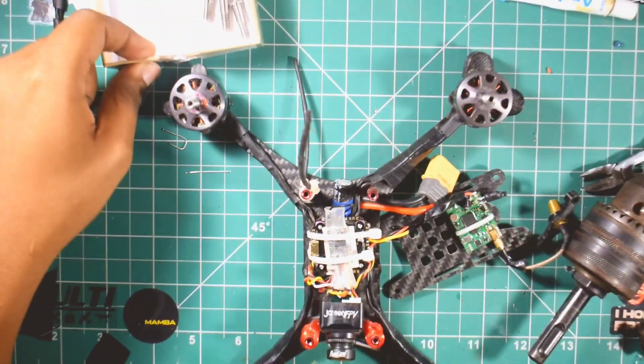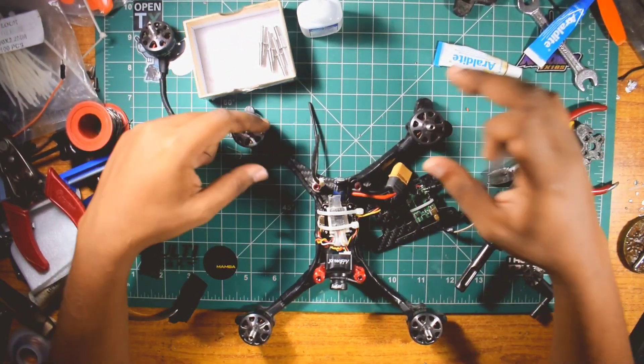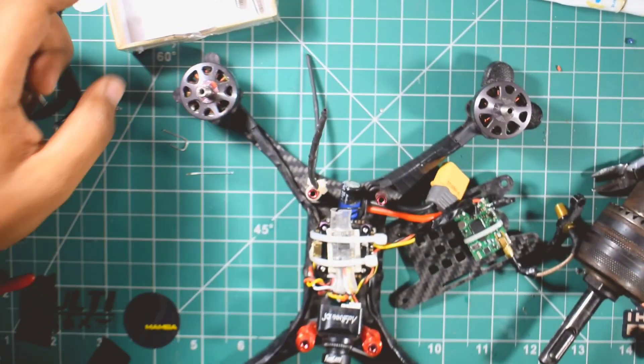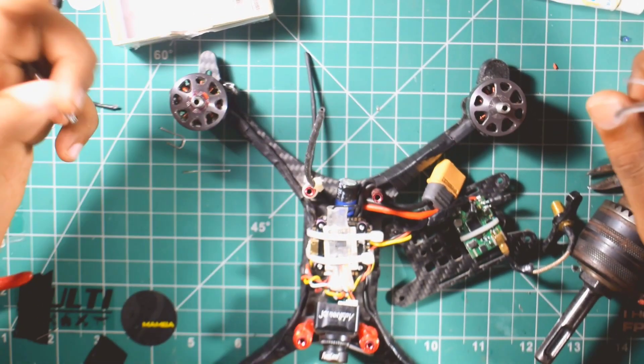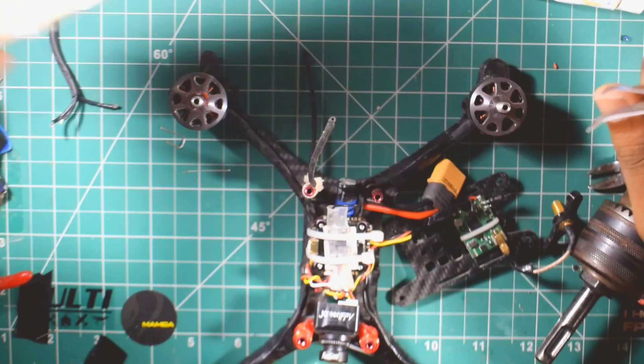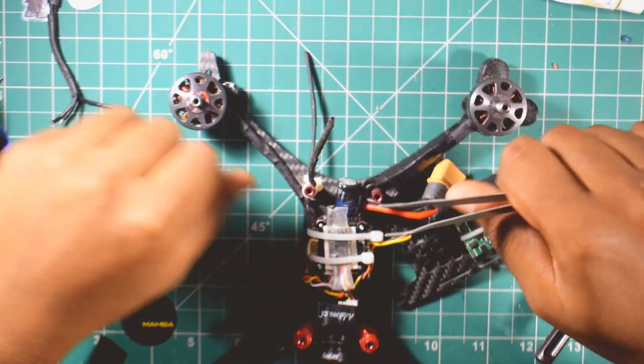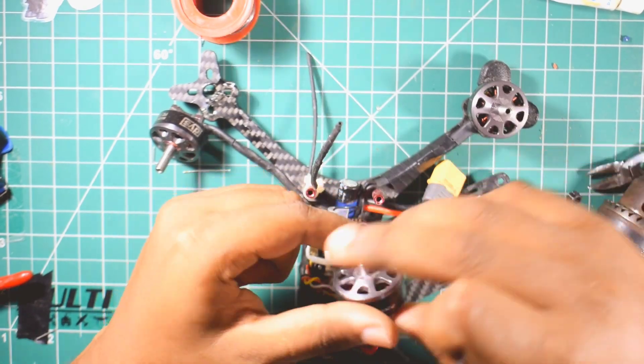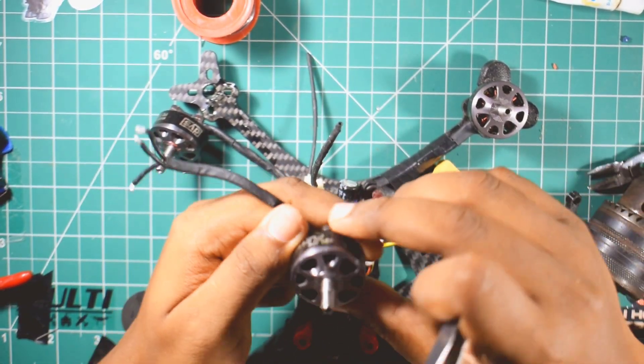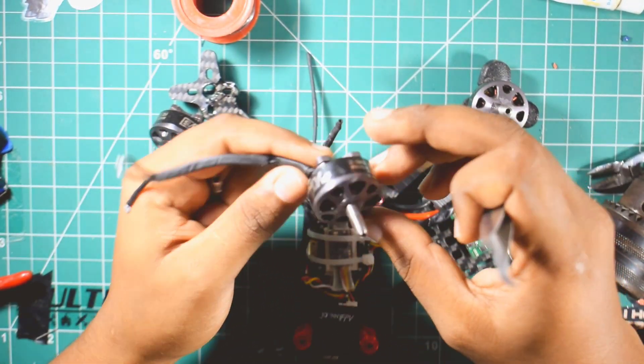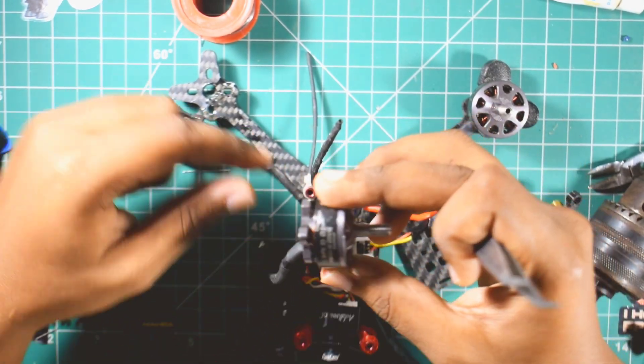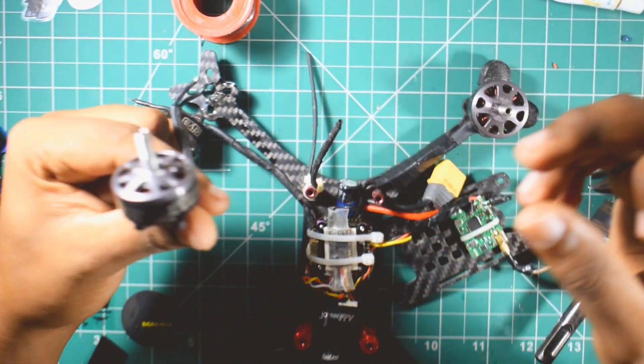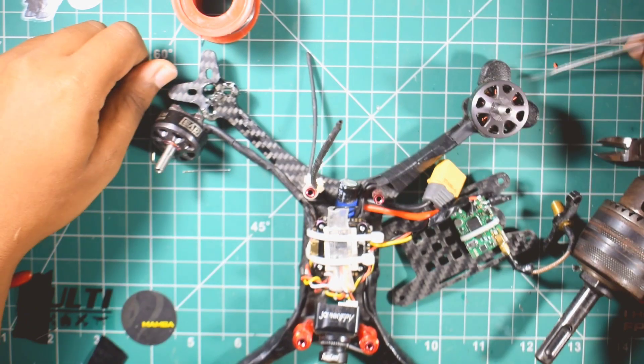So you don't have a spare motor bell and nor do you have a replacement shaft. Then what do you do? The best thing would be to replace the entire motor, but it's too costly to replace the motors every time you end up crashing and having a bent shaft.